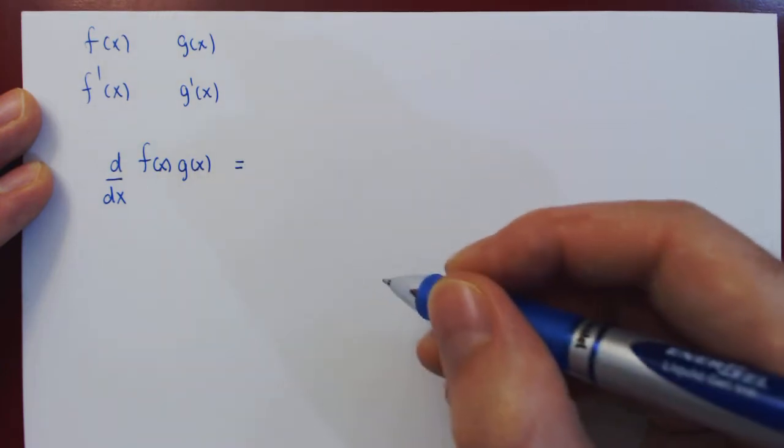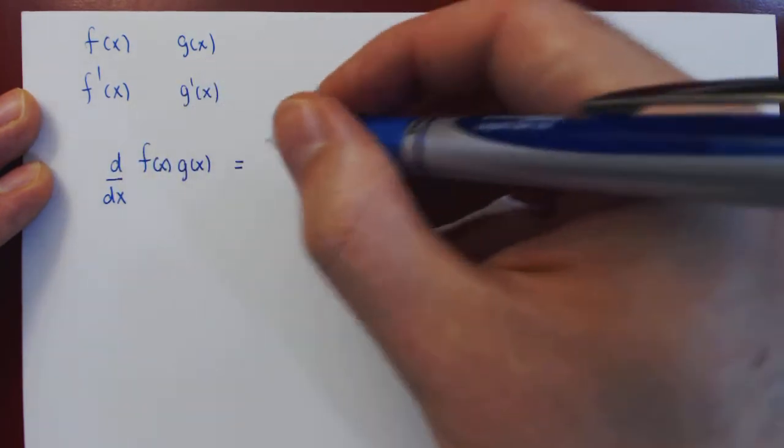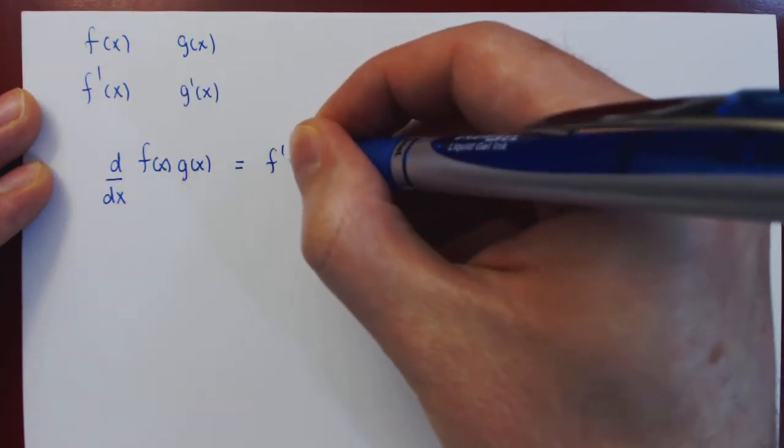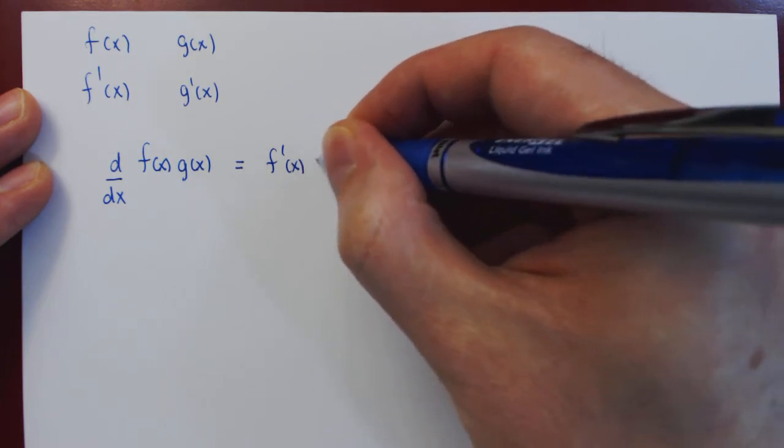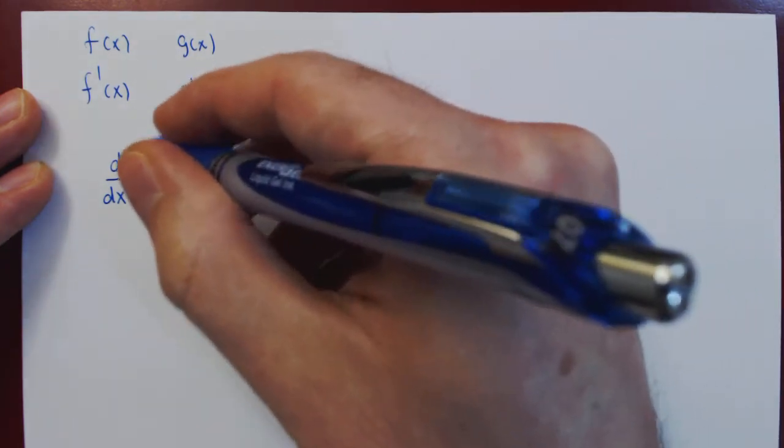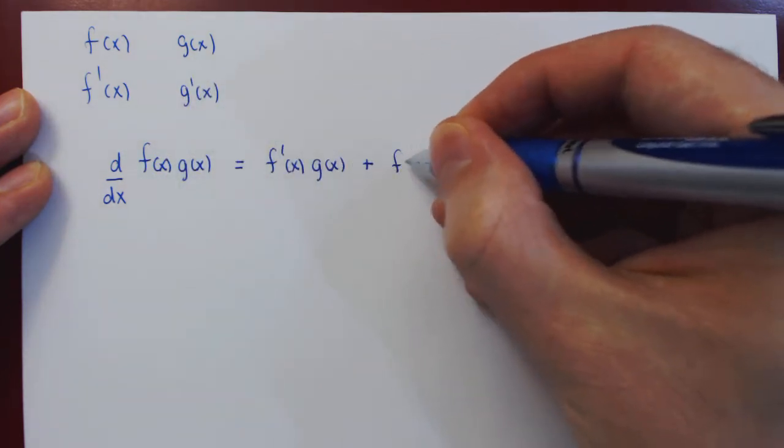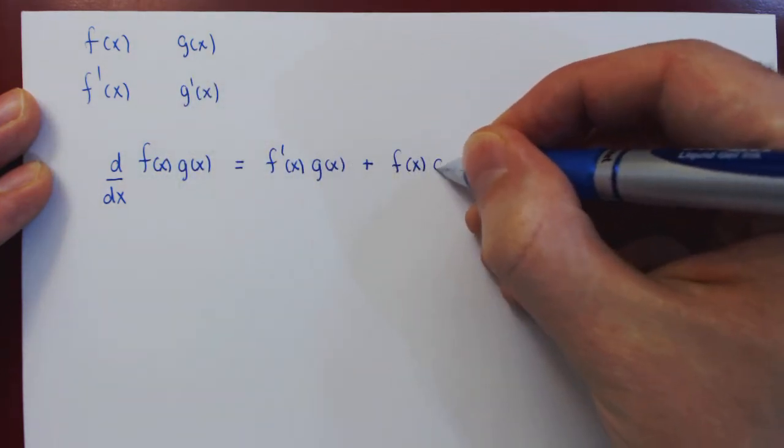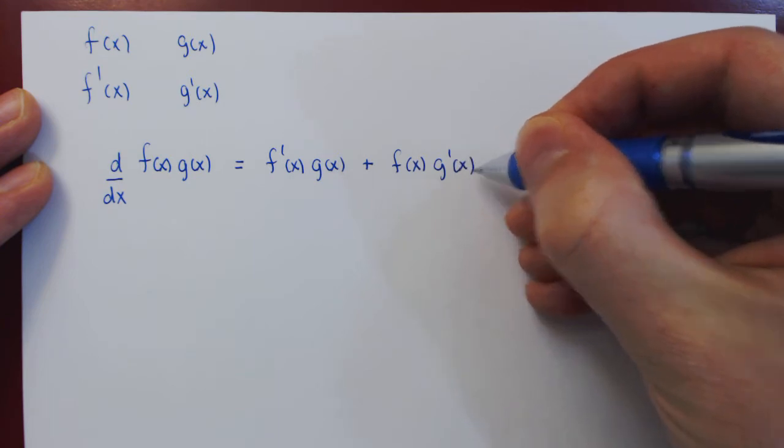And the answer is remarkably simple. It is the derivative of the first function, so f prime of x, times the second function. And then plus the first function, times now the derivative of the second function.